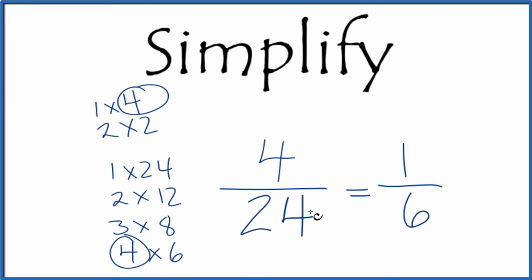So we've simplified the fraction 4 over 24 down to 1 over 6. If you divide 4 by 24 and 1 by 6, you'll get the same value.